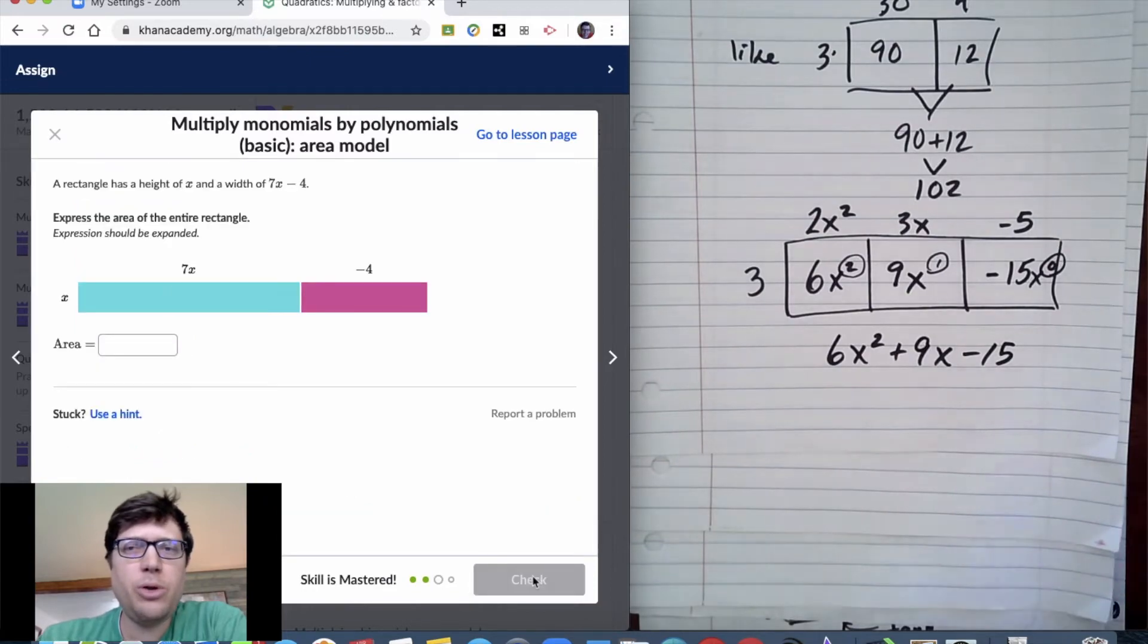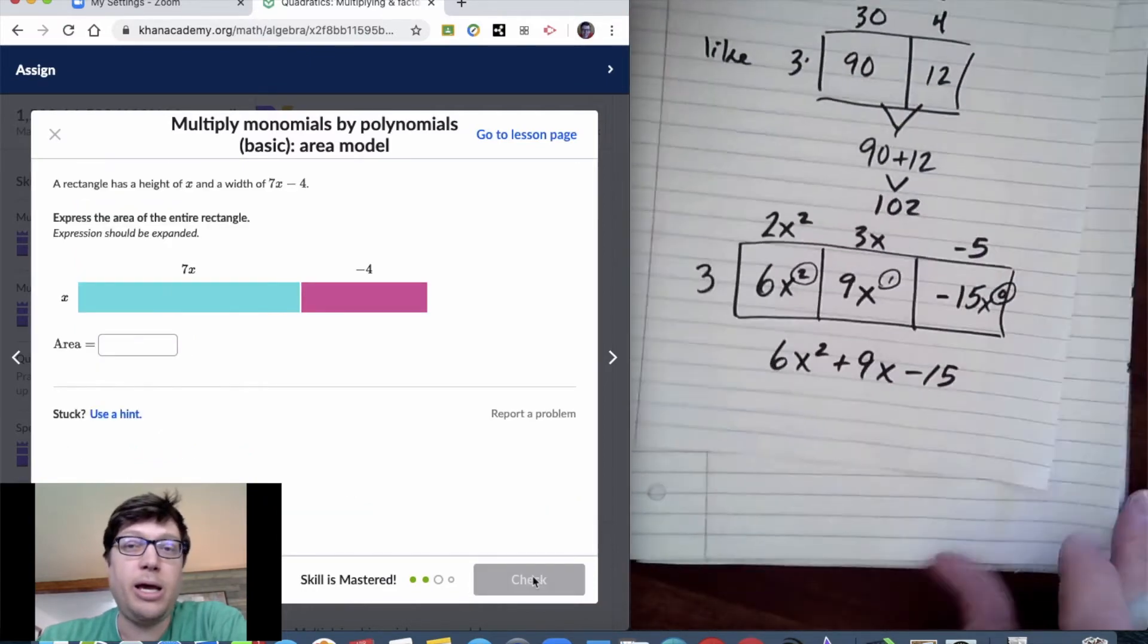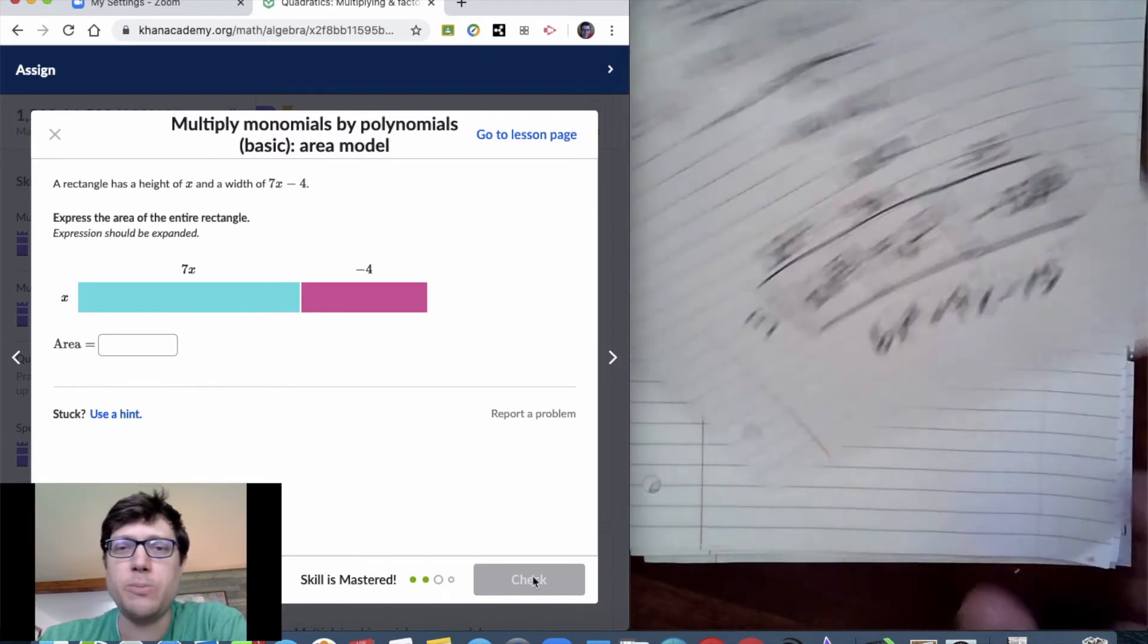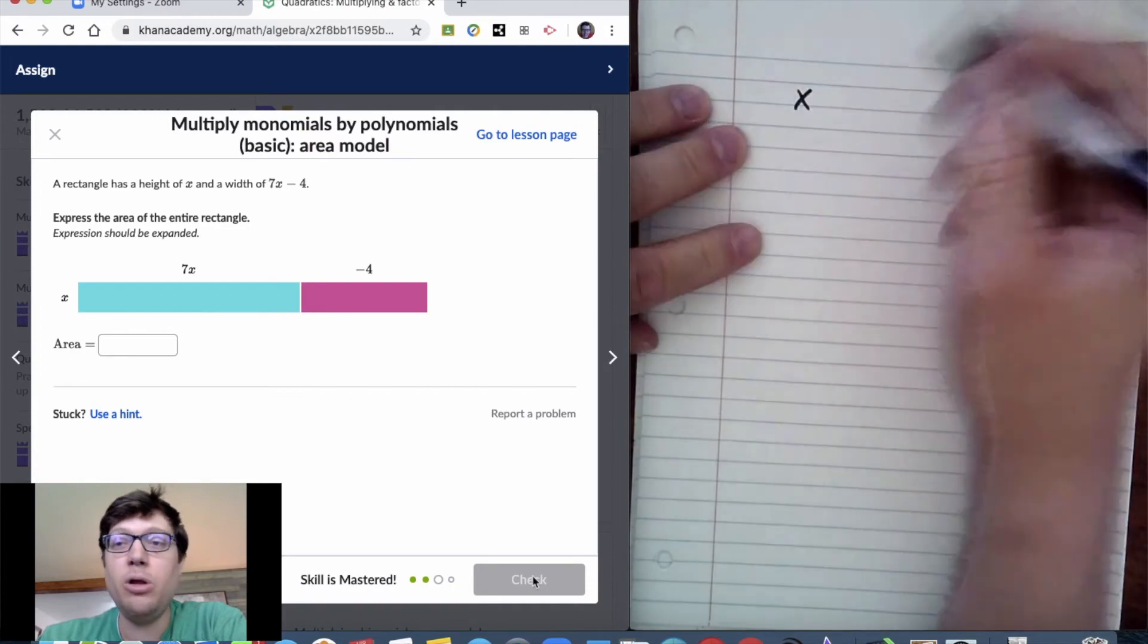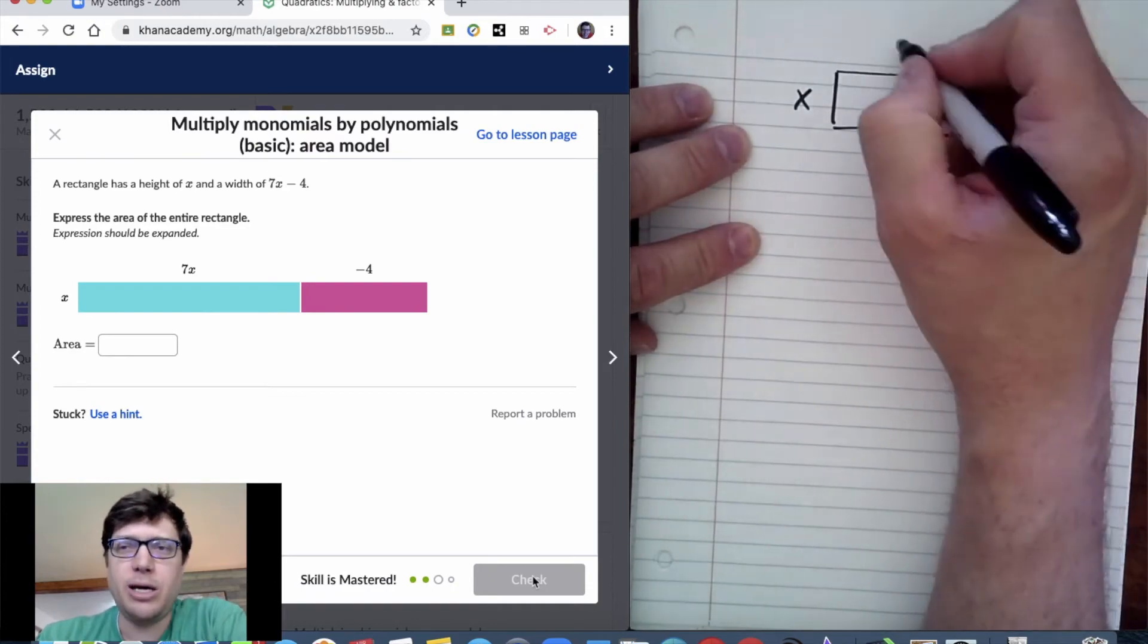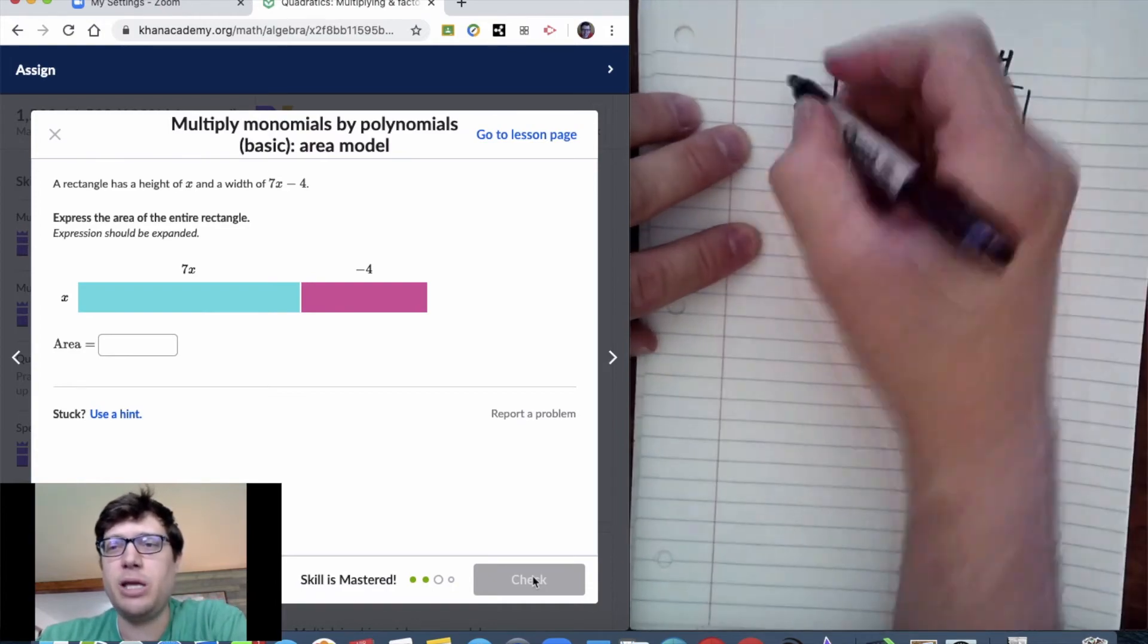Now, the other two questions had like multiplying by a number, but this is what happens when you multiply a binomial, 7x - 4, by x, a variable. We still put it on the edge, x times 7x and x times negative 4.